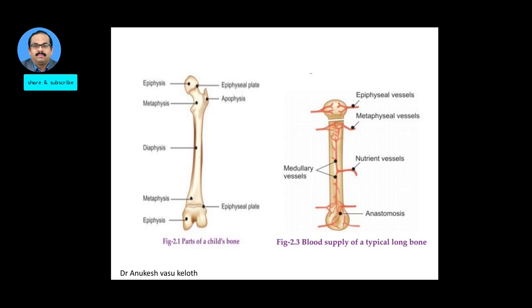During the growth of a bone, the epiphysis fuses with the metaphysis and the epiphyseal plate gets converted into mature bone. Regarding the blood supply: the epiphyseal ends are supplied by the epiphyseal vessels, the metaphysis by the metaphyseal vessels, and most of the bone by the nutrient vessels. The nutrient vessels supply the inner two-thirds of the cortical bone, while the outer one-third is supplied by the periosteal vessels.